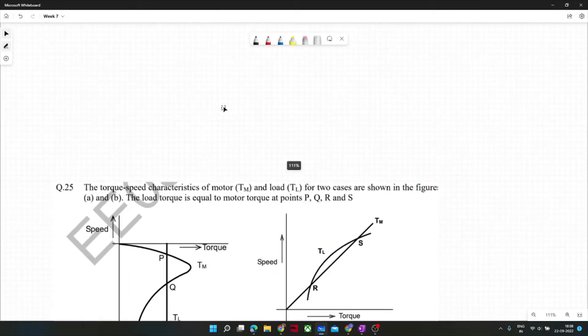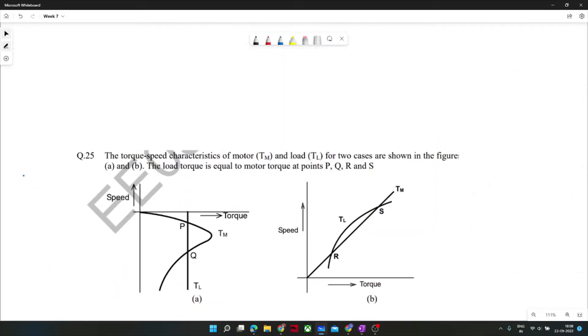This problem appeared in GATE 2014. We had to find out which torque-speed characteristics are stable or unstable. The load torque is given, motor torque characteristics are drawn, and we had to determine which point is stable and which point is unstable.